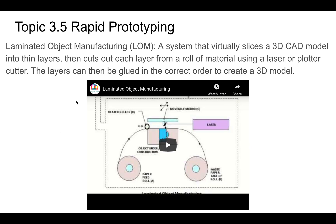This is an interesting manufacturing process called laminated object manufacturing. Essentially what you do - and you'll see this - a laser will cut a section of a sheet of material, and then you kind of stack them. This is similar to what we do sometimes in the design hub where we laser cut something and stack it to get multiple layers. One of the students did a phone stand that way, stacking wood and gluing them together. The difference is this machine will actually do that stacking and gluing for you.